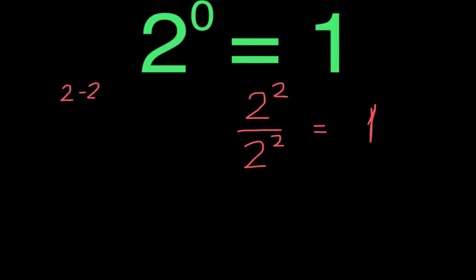So 2 take away 2 would give us an exponent of 0. So we would have 2 raised to the 0 power. So we see that 2 to the 0 power is equal to 1.